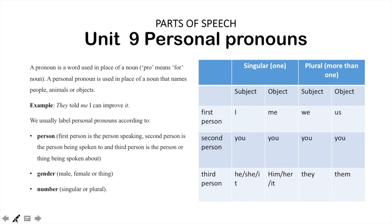A pronoun is a word used in place of a noun. 'Pro' means 'for.' A personal pronoun is used in place of a noun that names people, animals or objects.